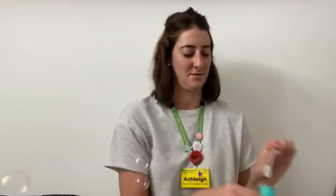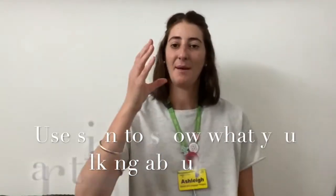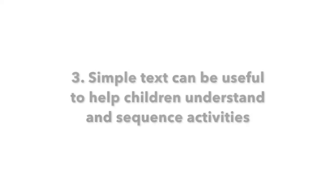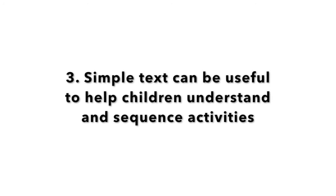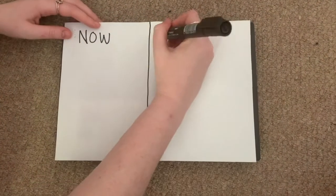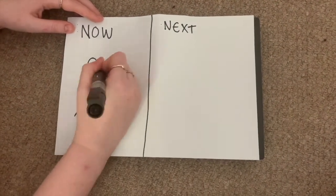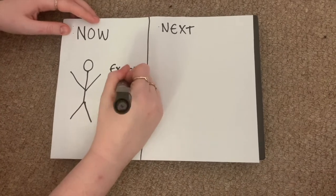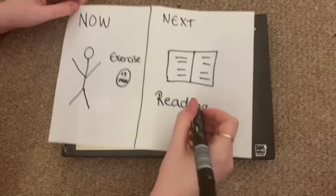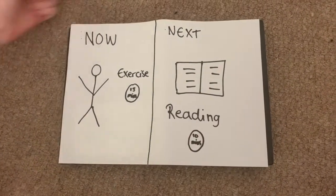More bubbles. Bubbles are finished. Simple text can be useful to help a child understand and sequence activities in their head. This is an example of a now and next board. Simply write down what you would like your child to do now, and what you would like them to do when that activity is finished. This will help your child to understand the sequence of activities.